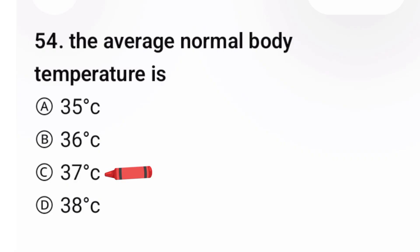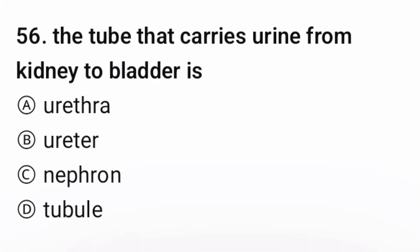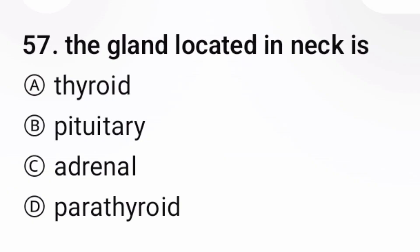Question 54: The average normal body temperature is — the correct option is C, 37 degrees centigrade. Question 55: Which part of the brain controls voluntary movement? The correct option is B. Question 56: The tube that carries urine from kidney to bladder is — the correct option is B.